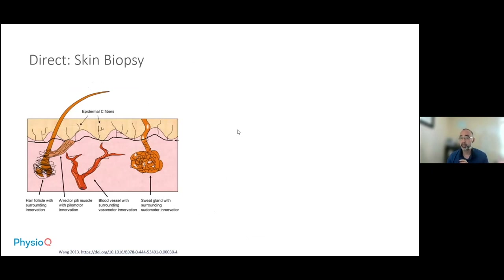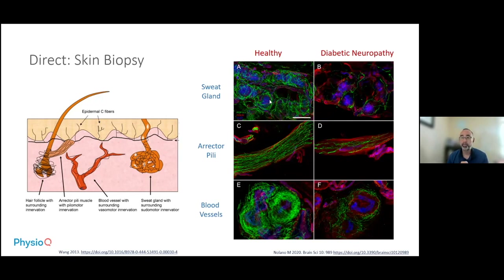The last direct assessment is a skin biopsy. The sympathetic nervous system clearly influences three areas in the skin: the arrector pili muscle — which gives you goosebumps — blood vessels, and sweat glands. When you take a skin biopsy, you can look at the sympathetic nerves labeled in green. Comparing a healthy person to a person with diabetic neuropathy, you can see sympathetic nerves are intact at the sweat glands for the healthy person, but not in the diabetic neuropathic patient. These are clearly invasive approaches, so indirect assessments are more practical.